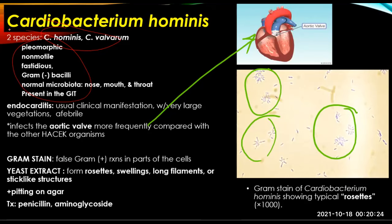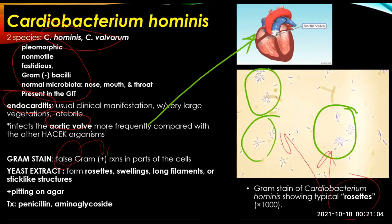However, there is no fever with Cardiobacterium endocarditis, and it infects the aortic valve. Gram stains of the bacilli often show false gram-positive reactions in parts of the cells. The organisms tend to form rosettes and may form swellings, long filaments, or stick-like structures in yeast extract. They are also positive for pitting on the agar. Treatment includes aminoglycosides and penicillin.